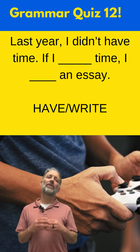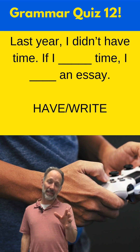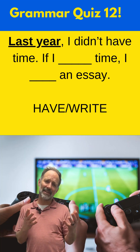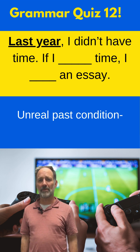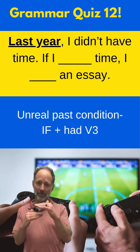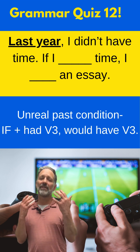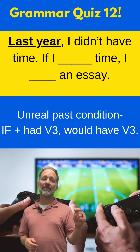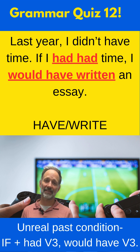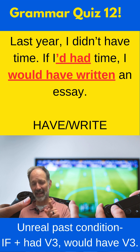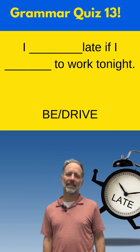Fill in the blank with the correct form for this conditional sentence: Last year, I didn't have time. If I blank time, I blank an essay. Seeing 'last year' tells me this is a past conditional, and it's unreal because I didn't have time. The form for past conditionals is if plus past perfect (had plus V3), then would have plus V3. So: if I had had time, I would have written an essay. You can also say: if I'd had time, I would have written an essay.